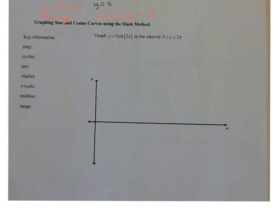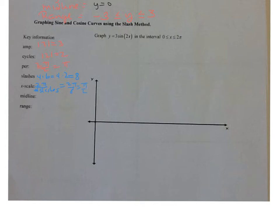Your amplitude is the absolute value of 3, which is 3. The number of cycles is the absolute value of 2, which is 2. Your period is 2 pi over 2, which is pi. Your slashes — there's a formula for this — slashes equals 4 times b, so 4 times 2, which is 8. Your x scale is a formula: 2 pi over the number of slashes, so 2 pi over 8, which is pi over 4.